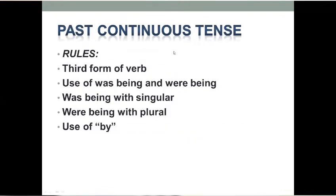Next tense हमारे पास आता है Past Continuous Tense. Past Continuous Tense के active sentences को passive में change करने के जो rules हैं वो हैं: third form of verb — verb की third form use करनी है। Use of 'was being' and 'were being' — was being जो है singular के साथ इस्तमाल करेंगे, were being जो है plural यानि एक से ज़्यादा noun के साथ इस्तमाल करेंगे। साथ में by भी use करेंगे।